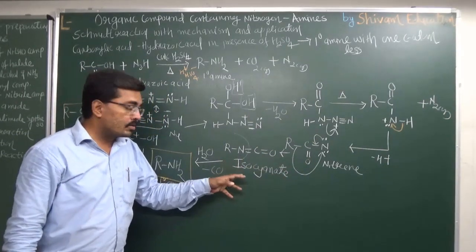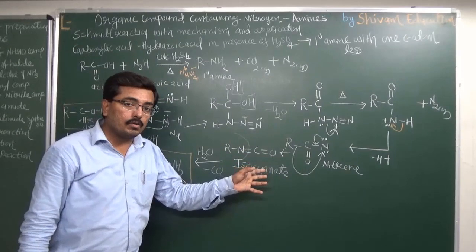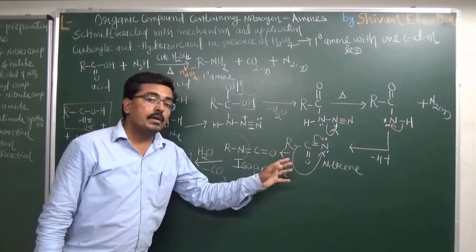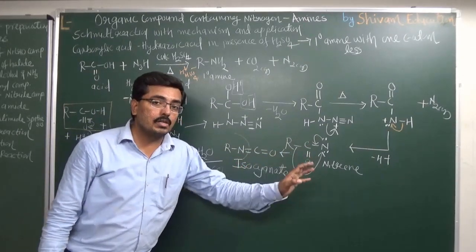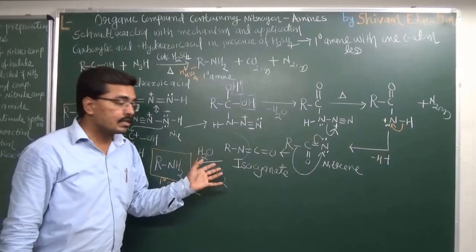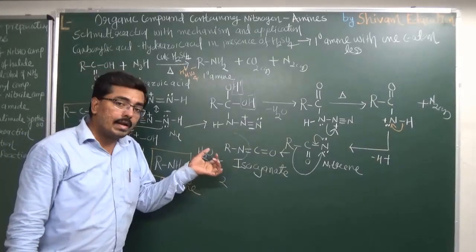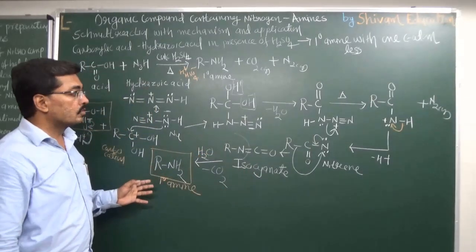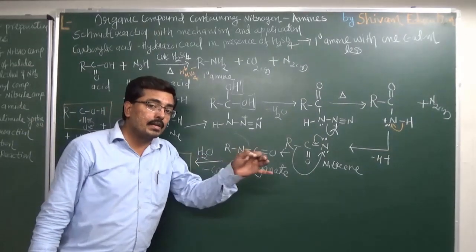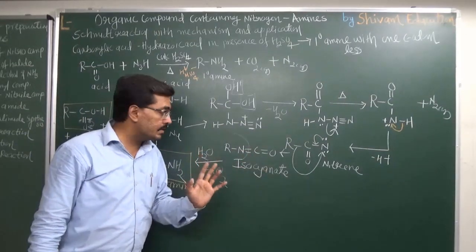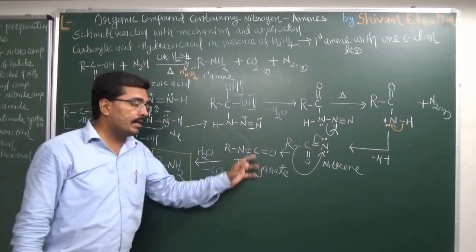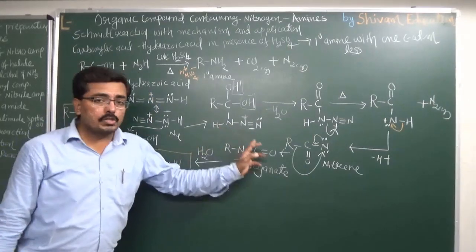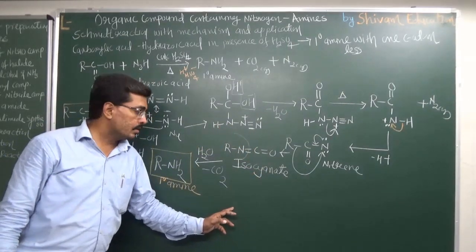If your question is how isocyanate is converted into a primary amine, we have already discussed that in the Hofmann reaction — a hydroxyl group attacks, it converts to carbamic acid, carbamic acid undergoes decarboxylation giving a negatively charged species on nitrogen, and further it gives a primary amine.